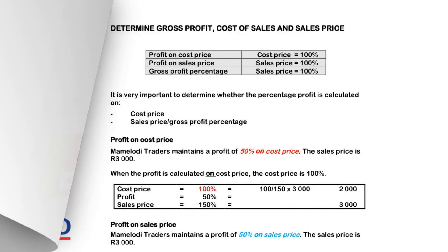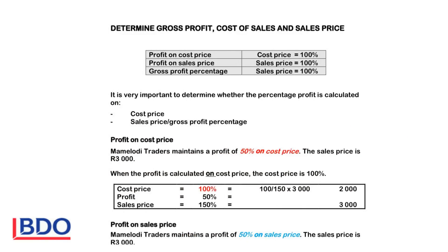Good morning. We will pay attention to the gross profit, cost of sales, and sales price today. It is very important to determine whether the profit is made on cost price, because then the cost price equals 100%. If the profit is made on sales price, the sales price equals 100%. Gross profit percentage is profit on sales price. It is very important to determine whether this profit is on cost or sales price, because you will get different answers if you don't do the correct calculation.